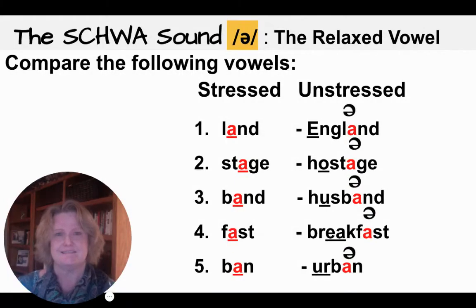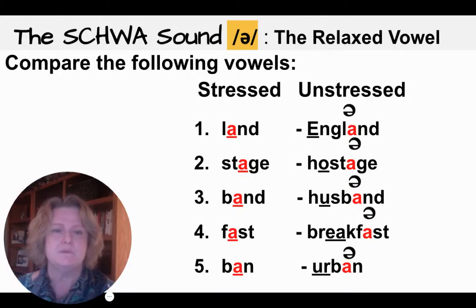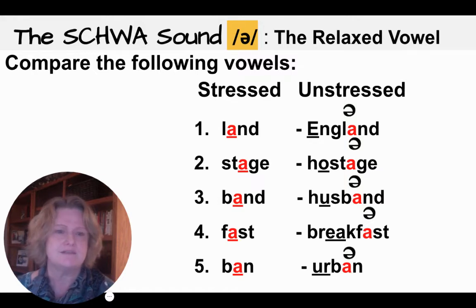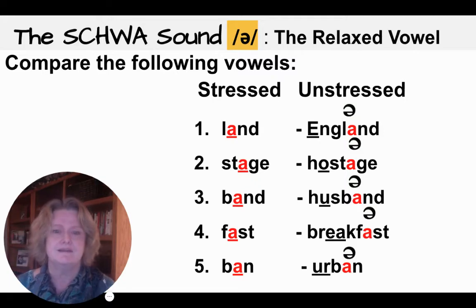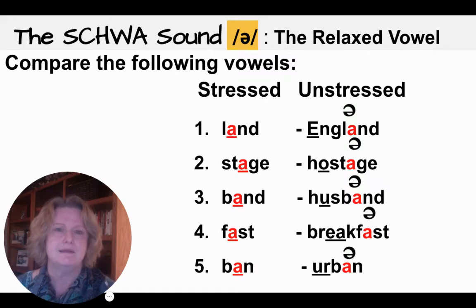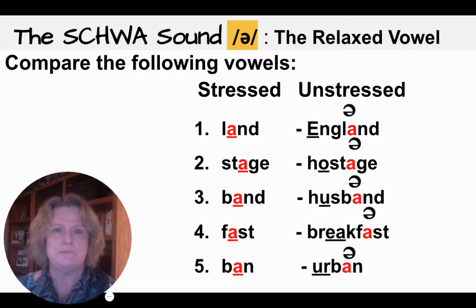Fast is black. But in breakfast, 'brek' is red and stressed, while 'fast' is unstressed and becomes 'fust' — breakfast. Think of the word ban — black. In urban, 'urb' is purple and stressed, and 'ban' becomes 'bun' — urban.